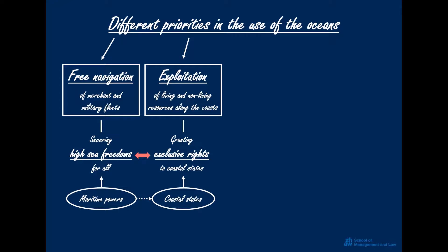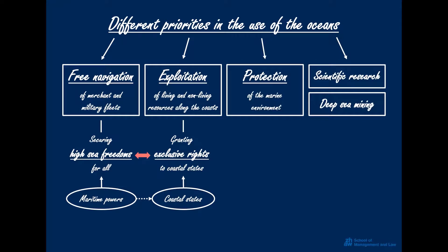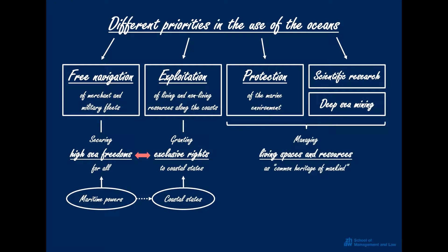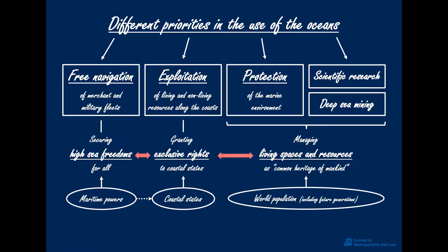Which is why many nations are interested in both free navigation and exclusive rights to the exploitation of resources. Yet other priorities are protecting the marine environment, enabling scientific research, and regulating deep sea mining. This is all about managing common living spaces and common resources. At their core, the oceans are considered common heritage of mankind in current international maritime law. Even though these interests can potentially clash with interest in exploiting resources, they are crucial for the survival of the planet and the interests of the whole world population, including future generations.